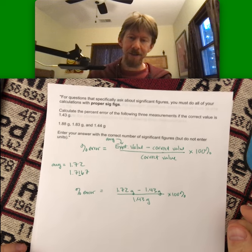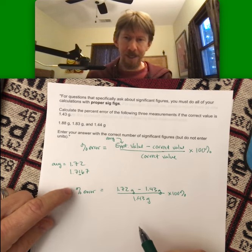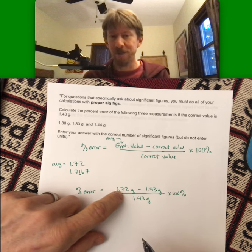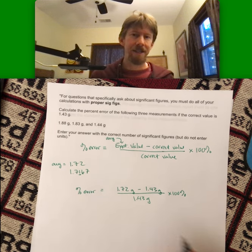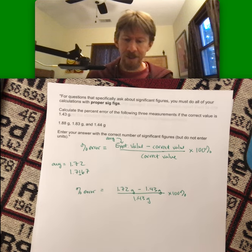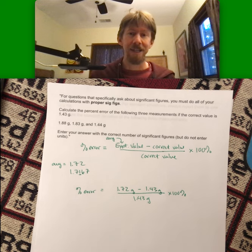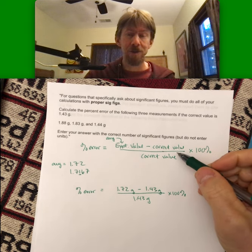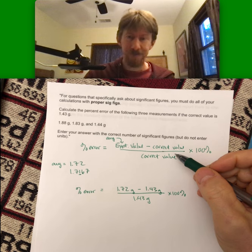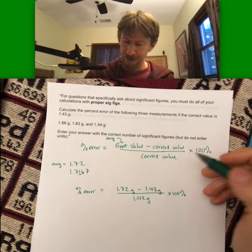One thing to point out here is that percent error can be negative. It's going to end up being positive here. But if your experimental value or your average experimental value was less than the correct value it would produce a negative number. That's fine. Percent error can be negative.